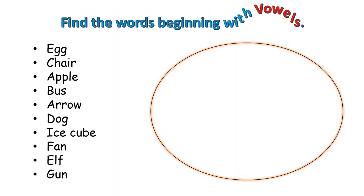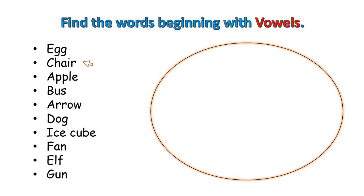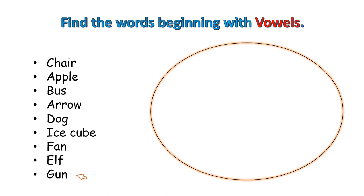It's time to test your knowledge — find the words beginning with vowels. Read the words with me: egg, chair, apple, bus, arrow, dog, ice cube, fan, elf, gun. Now find the words beginning with vowels from these words and put them in the circle.